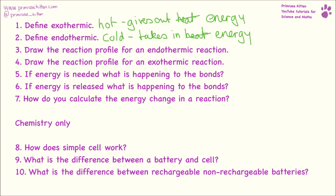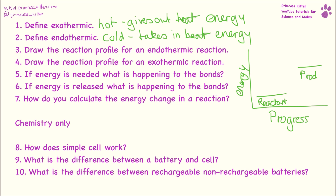Draw the reaction profile for an endothermic reaction. So for an endothermic reaction, if we have progress going along the bottom and energy up the side, we are going to start with our reactants down here and we are going to have our products here. This is what our reaction profile is going to look like. This bit here is going to be the overall energy change, and you can see we are taking in energy. This here is the activation energy.